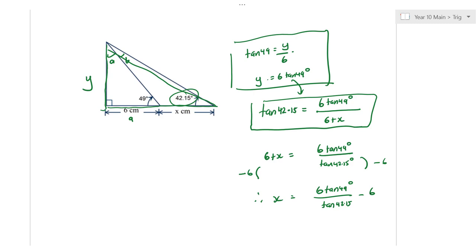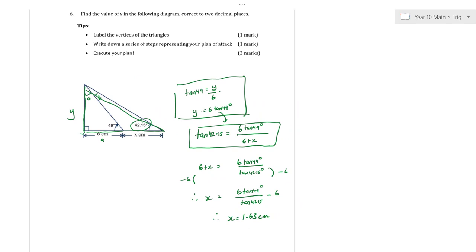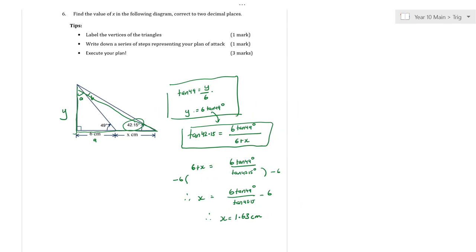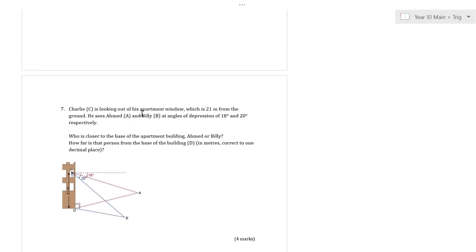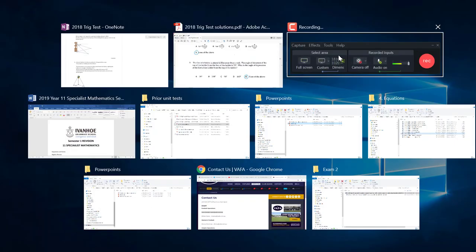Computing: 6 tan(49°) ÷ tan(42.15°) − 6 ≈ 1.625, so X ≈ 1.63 centimetres. The key insight was finding the shared height Y first, then using the larger triangle's adjacent (6 + X) to set up an equation and rearrange for X. I'll stop there as the bell's about to go — we can go through the remaining questions on the board next time.